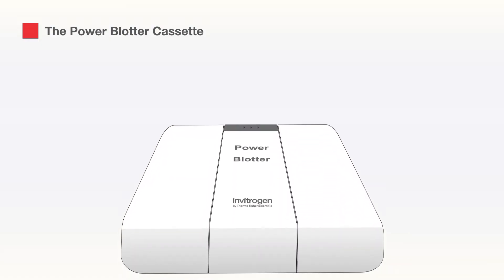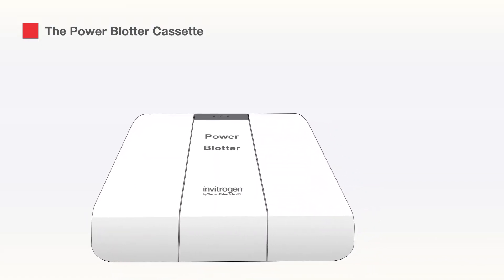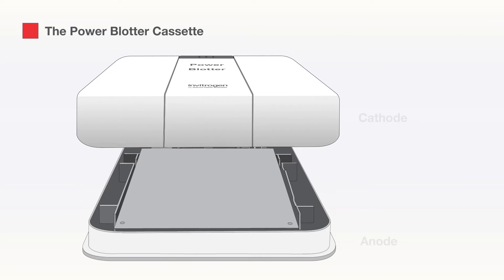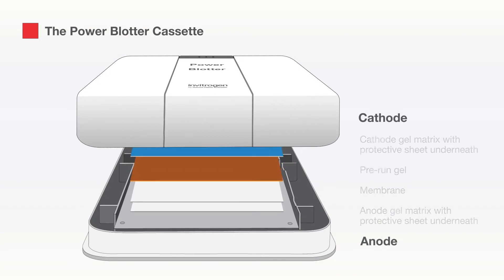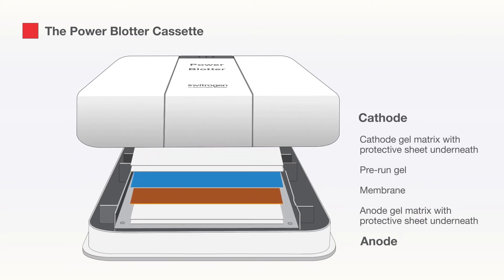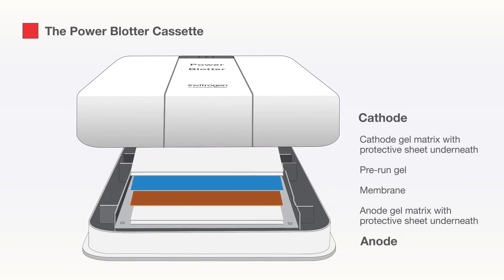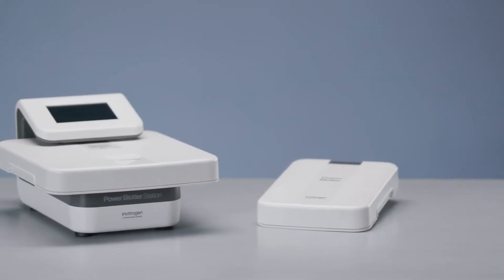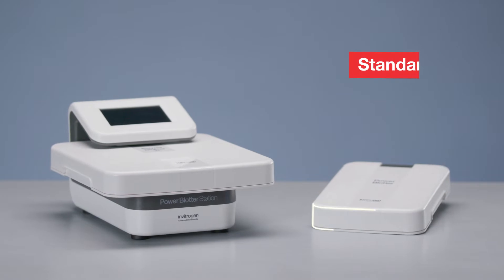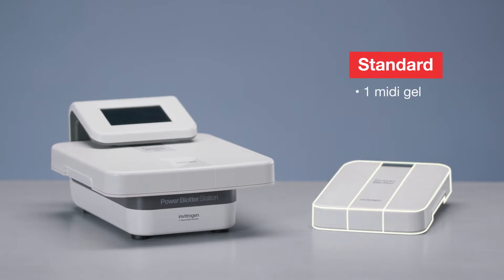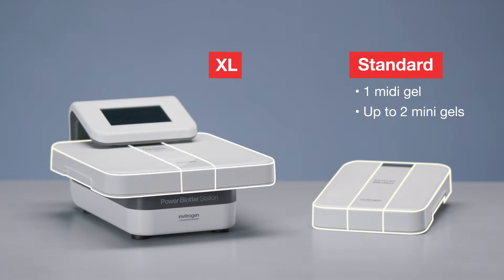In the Power Blotter system, the cathode and anodes are plates that are fixed to the top and bottom of the cassette frame respectively, and the transfer stack is placed in between the cassette during the transfer process. The Power Blotter has two different cassette sizes: a standard size for transferring one midi gel or up to two mini gels, or the XL cassette for transferring up to two midi gels or up to four mini gels at a time.